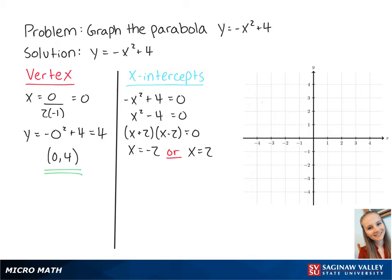Now we want to find the y-intercept, which is when x is equal to 0. So we set up the equation y equals negative 0 squared plus 4, which is equal to 4. Now that we have the intercepts x equals negative 2, x equals 2, and y equals 4, we can plot the points in the graph.